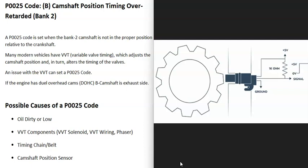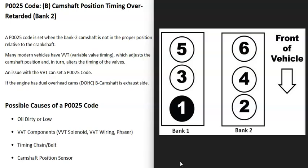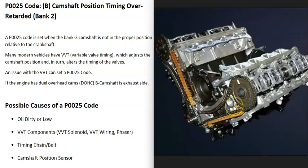To troubleshoot this, if you have a V6 or V8 engine, the engine is going to have two banks. Bank 1 is always the side of the engine with the number one cylinder. If you Google your engine's cylinder location or firing order, find the number one cylinder — that side is bank 1, and the opposite side is bank 2. Bank 2 is the side having the problem. Depending on the engine, you could have just one cam on each side, which is called single overhead cam. This engine here has one cam on each bank.